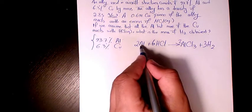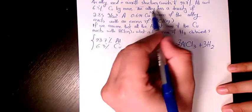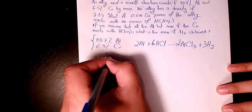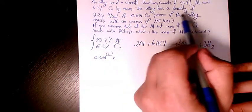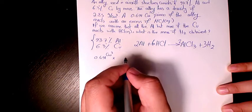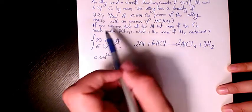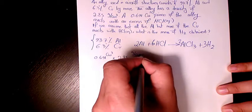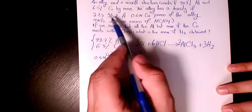First of all, we need to see how much aluminum we have. So we have 0.691 cubic centimeter, the volume of the piece of alloy. We need to find the mass. So that's going to be 2.85 grams per cubic centimeter, which is the density.